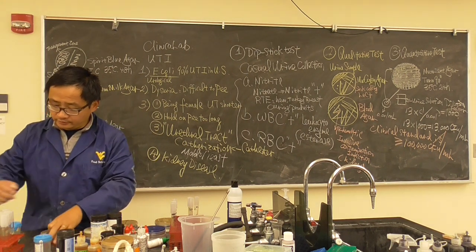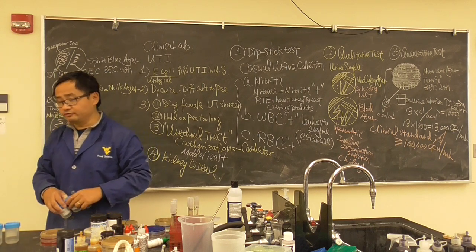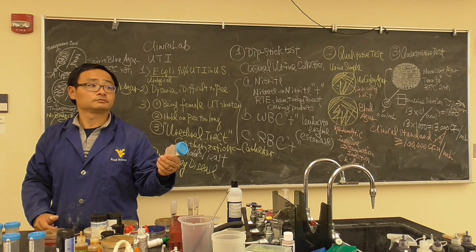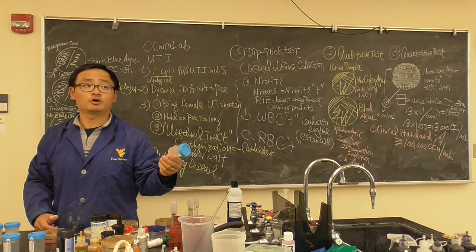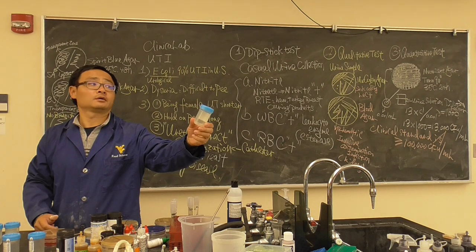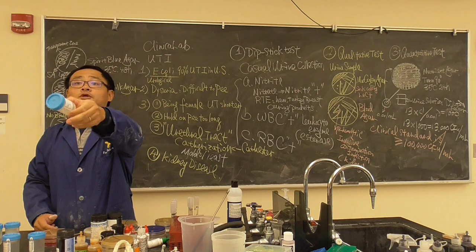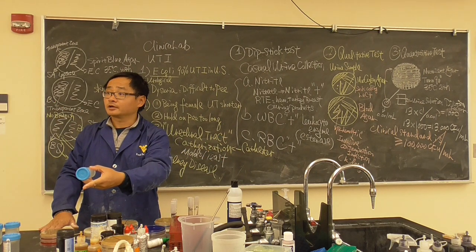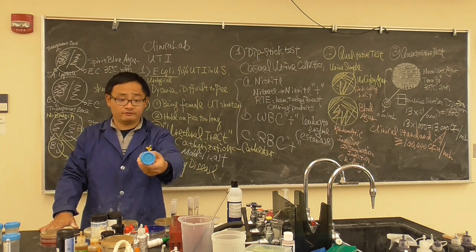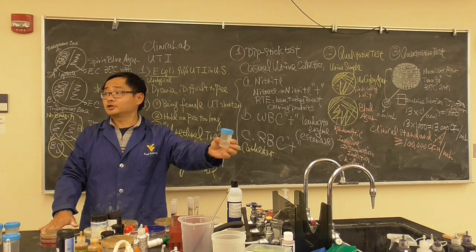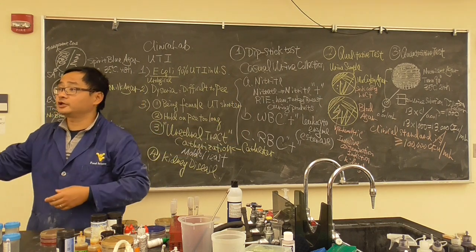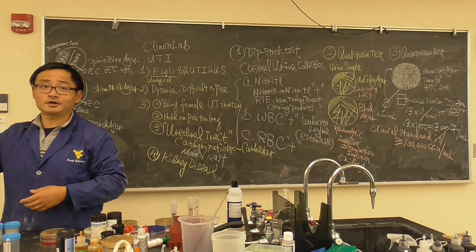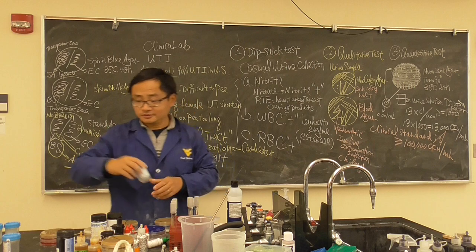You will also use your loop to do a streak plating for the quantitative test — to see whether the count reaches 100,000 CFU per mL — and we will count on Thursday. We also need three student volunteers to test their own urine. I want some male and some female volunteers. It's a free $20 test — normally you'd pay at least $20 copay at a clinic. Who wants to volunteer?